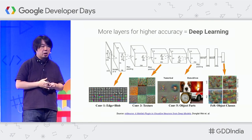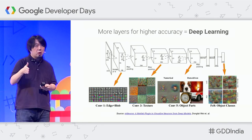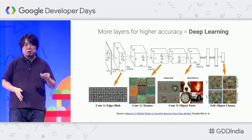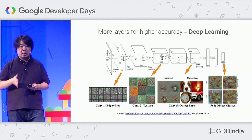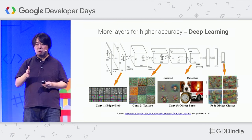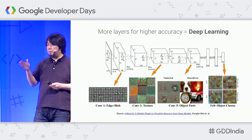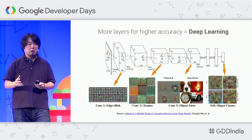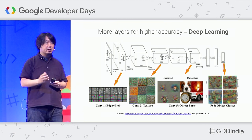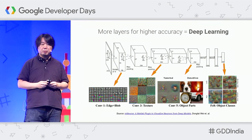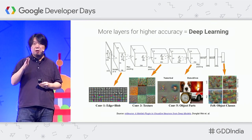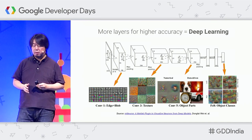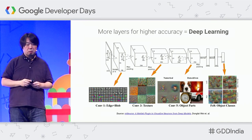If you have more and more layers between the input data and output layer, that is called deep neural networks or deep learning. By doing so, you can get much, much higher accuracy — and sometimes even higher accuracy than humans.